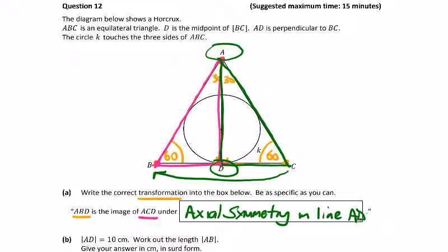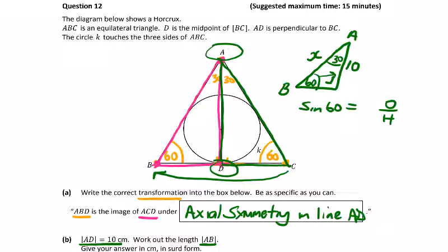Part B: We're told AD is equal to 10, work out AB. Give your answer in surd form. So AB is this one, we call it X. We have our 60 and our 30, and we are told AD is 10, so we can use either angle. The sine of 60 is equal to opposite over hypotenuse, which would be 10 over X. X is equal to 10 divided by sine 60, which is equal to root 3 over 2, so this is going to be 20 over root 3 or 20 root 3 over 3.